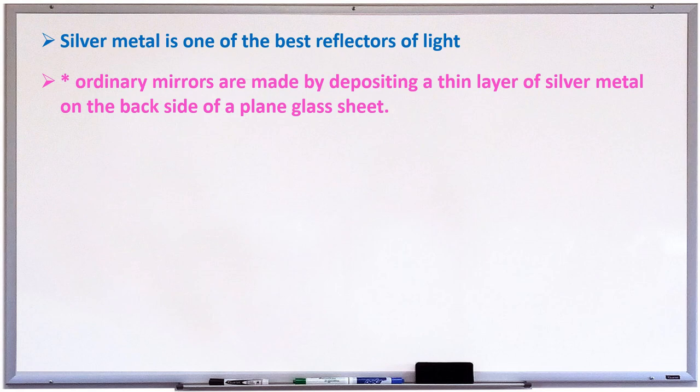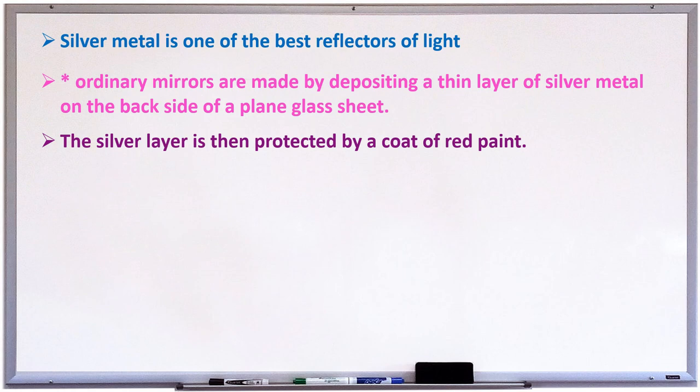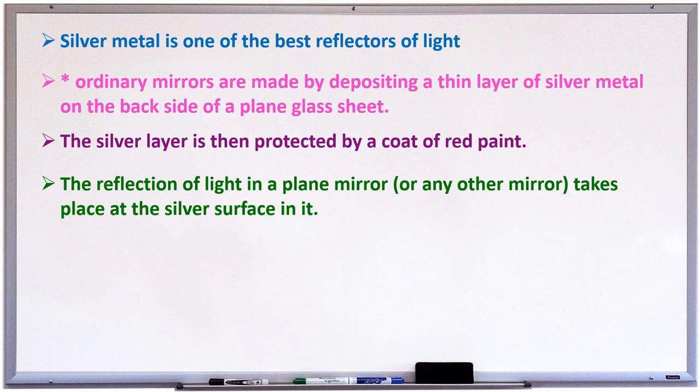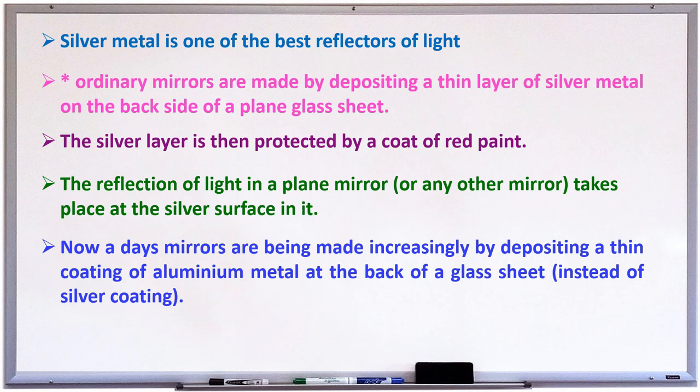Mirrors are made by depositing a thin layer of silver metal on the back side of the plain glass sheet. For example, a polished block of silver metal reflects almost all the light falling on it and does not transmit any light through it. But the surface of silver metal can be easily scratched and soon it becomes rough. So, mirrors are made by depositing a thin layer of silver metal on the back side of the plain glass sheet. The silver layer is protected by a coat of red paint also. Nowadays, mirrors are made by depositing a coating of aluminum metal at the back of a glass sheet. Instead of silver coating, we are using aluminum metal.